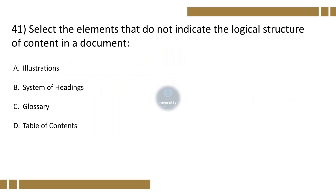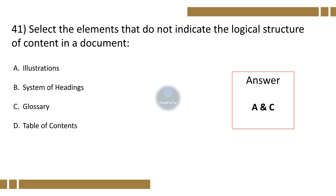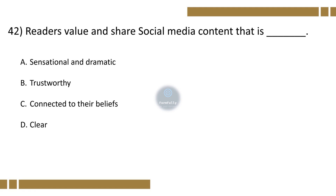Question 41. Select the elements that do not indicate the logical structure of content in a document. Option A: Illustrations, B: System of Headings, C: Glossary, D: Table of Contents. The correct option is A and C.